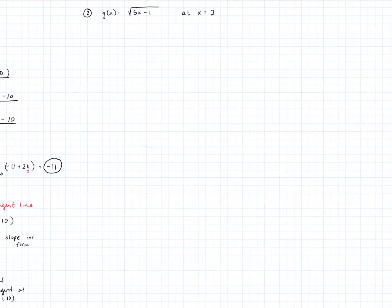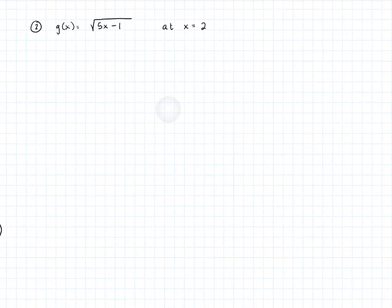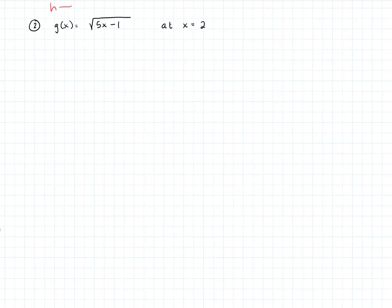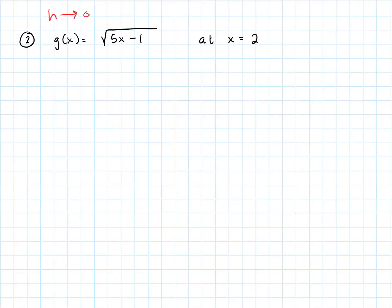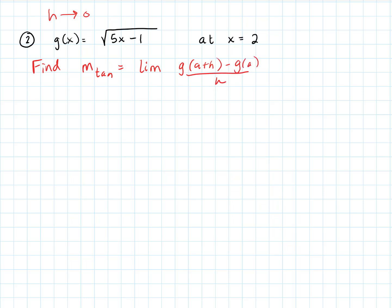Let's take a look at a root function. Same thing — I want to use the H going to zero definition to find the equation of the tangent line to this curve at x equals 2. The first thing we're going to need to do is find the slope of the tangent. Writing it one more time — we're using g — so g of a plus H minus g of a, all over H. The slope of that secant line as H goes to zero. In this case, a is 2.